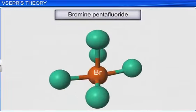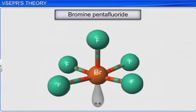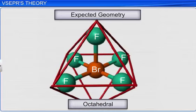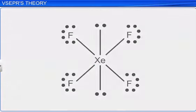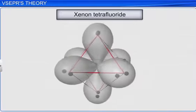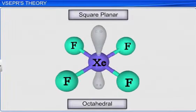In a molecule of bromine pentafluoride, the central atom bromine has five bonded pairs of electrons and one lone pair of electrons. Therefore, the geometry of the molecule is distorted octahedral, or square pyramidal, due to the presence of a lone pair of electrons on the central bromine atom. In a molecule of xenon tetrafluoride, the central xenon atom is surrounded by four bonded pairs of electrons and two lone pairs of electrons. The geometry of the molecule is distorted to square planar from the regular octahedral geometry, due to the presence of two lone pairs of electrons on its central xenon atom.